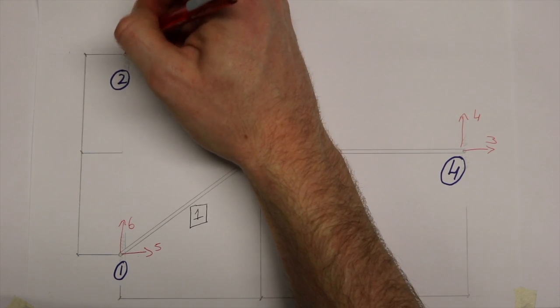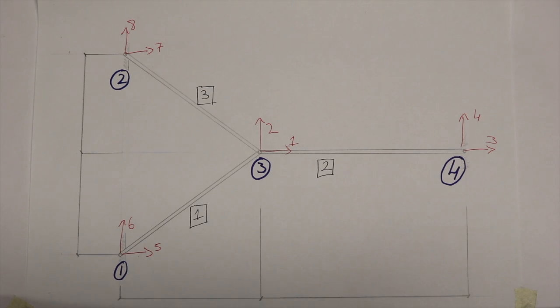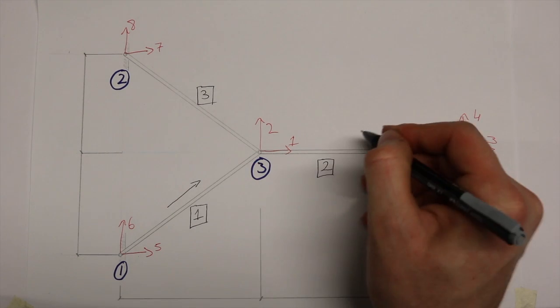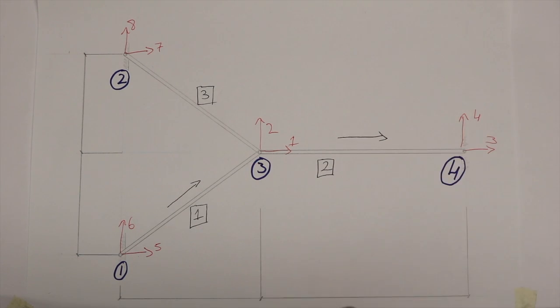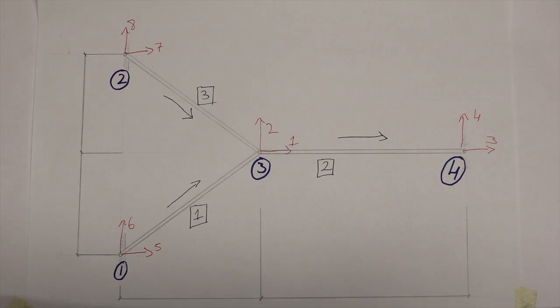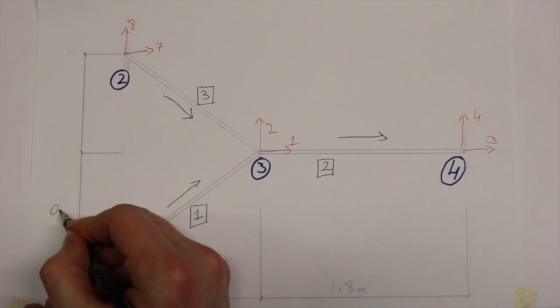We now choose the near and far ends of each member in our truss, showing this with an arrow with the head at the far end and the tail of the arrow at the near end of each member.